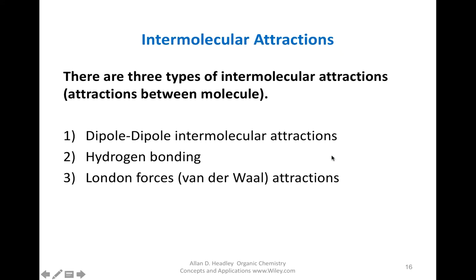Let's quickly go on to another topic — intermolecular attractions. What we've been looking at is intra-molecular bonding, meaning how atoms are connected within molecules. Now we're looking at attractions across molecules — inter-molecular. You will need at least two molecules to consider intermolecular attractions. There are three types: dipole-dipole attraction, hydrogen bonding, and London forces. We'll do a quick review of each and their effects on physical properties of molecules.